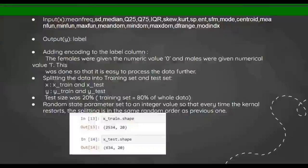X_train and X_test, Y_train and Y_test, the test size of 20 percent and the training set is equal to 80 percent of whole data. I've also used a random state parameter to set an integer value so that every time the kernel restarts, the splitting is in the same random order as previous one. You can see clearly that X_train consists of 2,534 rows and X_test consists of 634 rows, and the columns are 20.